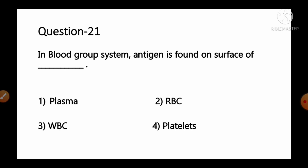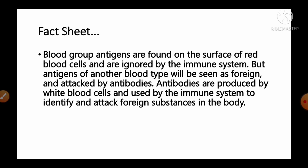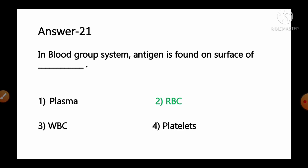Question number 21: In the blood group system, antigen is found on the surface of — options: 1) plasma, 2) RBCs, 3) WBCs, 4) platelets. Blood group antigens are found on the surface of red blood cells and are ignored by the immune system. Antigens of another blood type are seen as foreign and attacked by antibodies present in the serum. So option number 2, RBCs, is the correct answer.